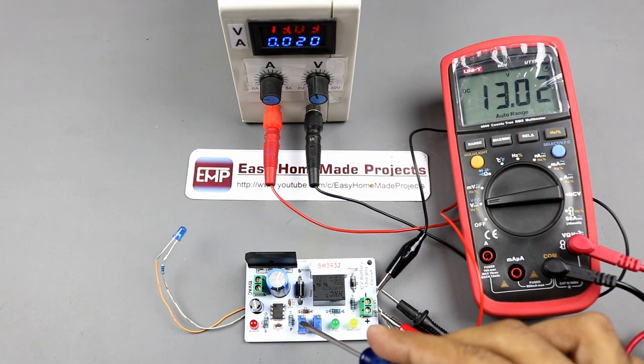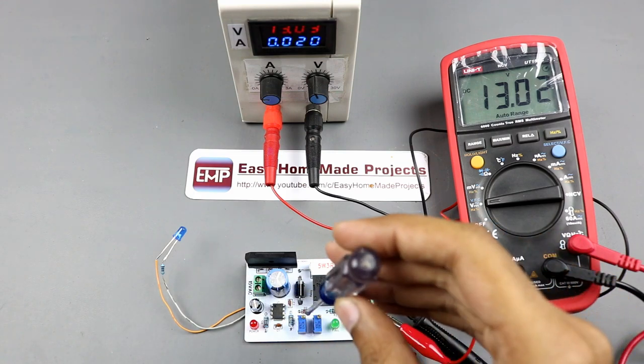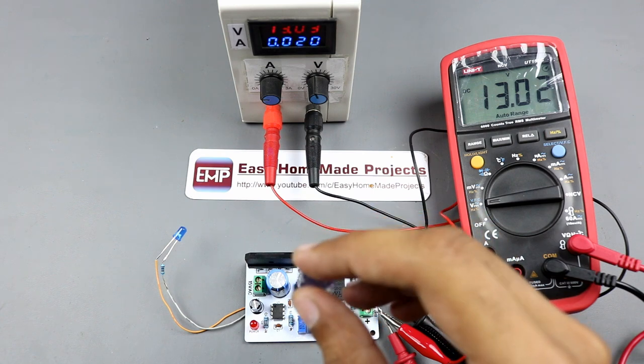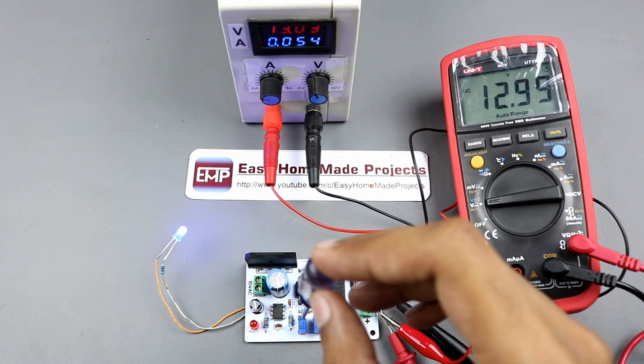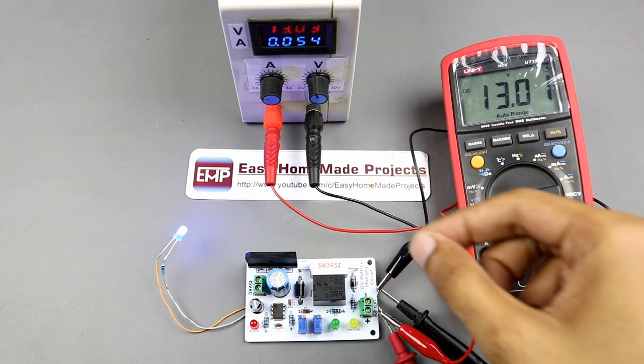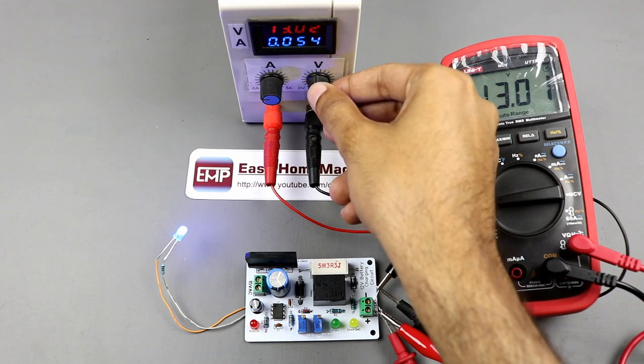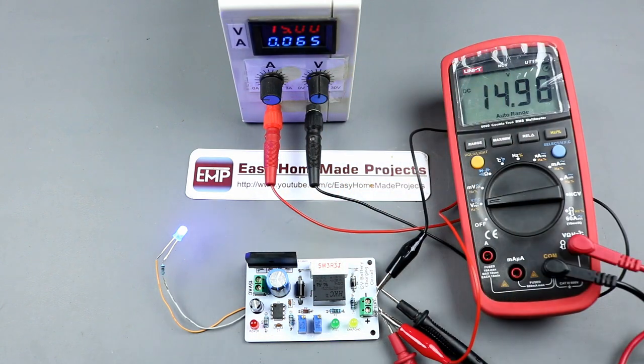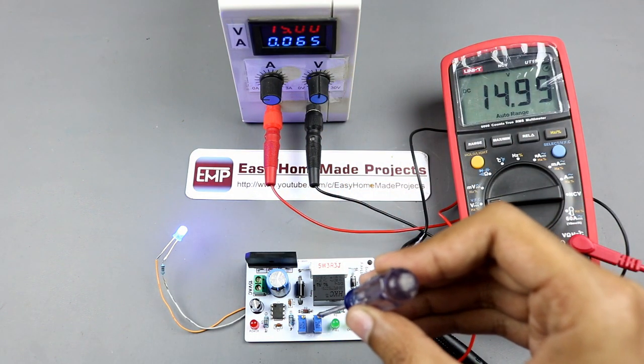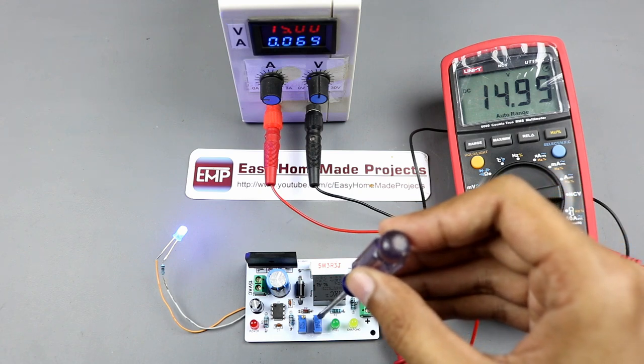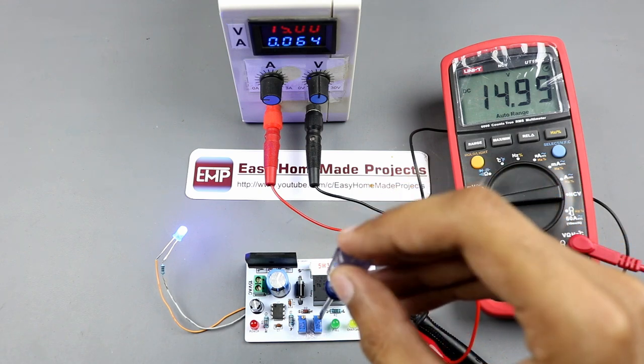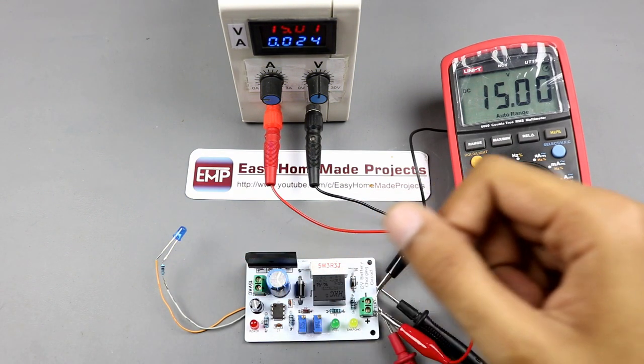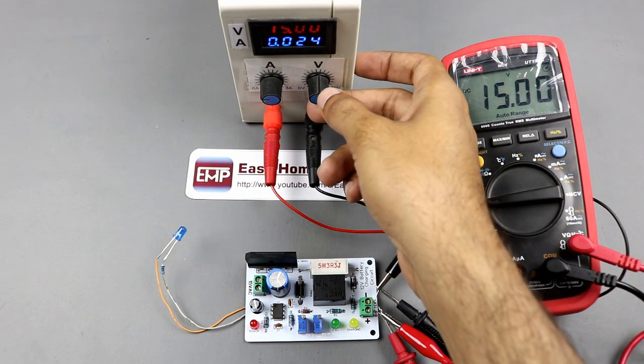Now tune this LSP potentiometer until this LED lights up. Now set the power supply voltages at 15V. This LED should turn on at 13V and should be turned off at 15V.